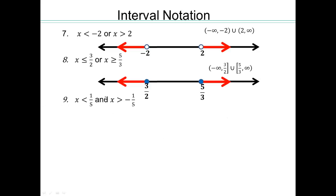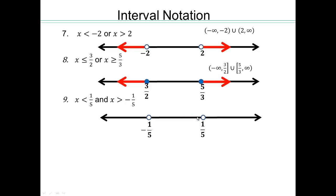Now an 'and' example: negative one-fifth and one-fifth are on the number line. x smaller than one-fifth goes to the left, and x bigger than negative one-fifth goes to the right. Since it's 'and', both must be simultaneously true — so the solution is everything in between. That gives open bracket negative one-fifth to one-fifth, open bracket.